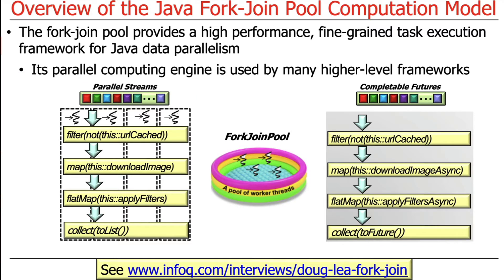The ForkJoin Pool is used as a parallel computing engine by other higher-level frameworks that are part of modern Java — for example, parallel streams and completable futures. You can also use it with reactive programming frameworks like Project Reactor or RxJava. If you want to learn all there is to know about the background of ForkJoin, take a look at this interview with Doug Lee, who wrote the ForkJoin Framework and has a nice description of how it works and why it's cool.